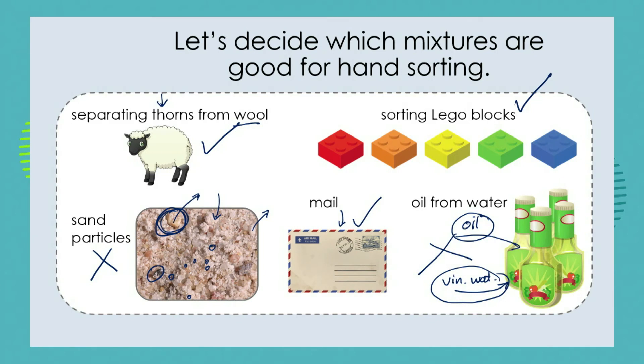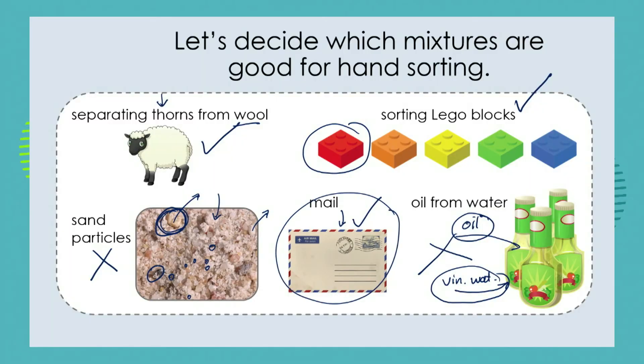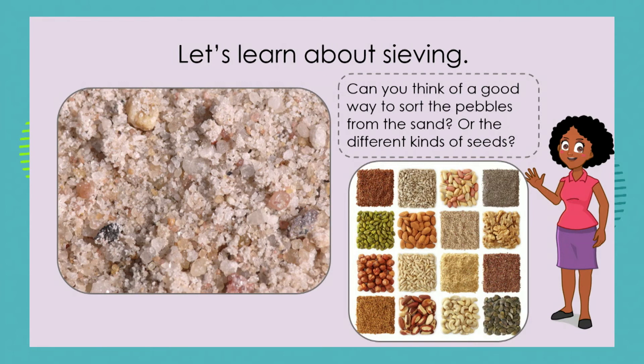Over our next few lessons we're going to look at different kinds of mixtures and see what kind of separation method suits each one. Hand sorting is very simple and easy, but it's important that your items are large enough. The thorns in the wool — you can physically use your hands to sort those — but other mixtures are going to need other methods of separation.